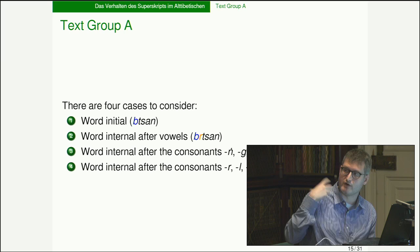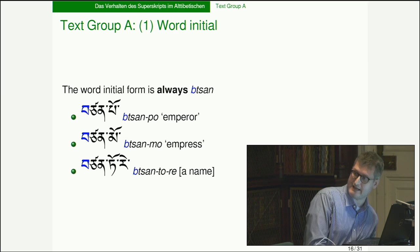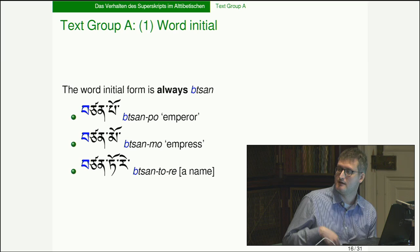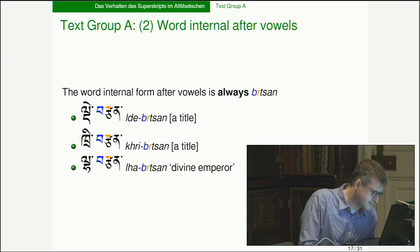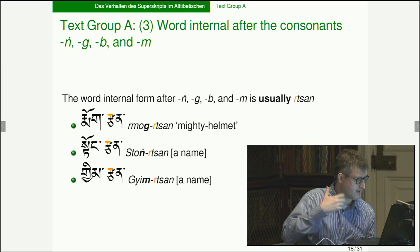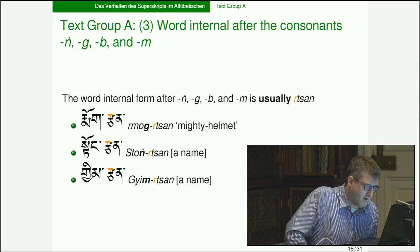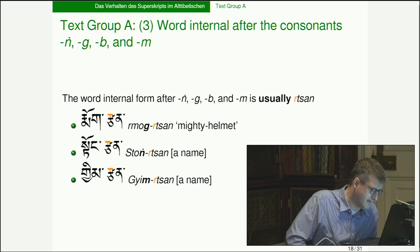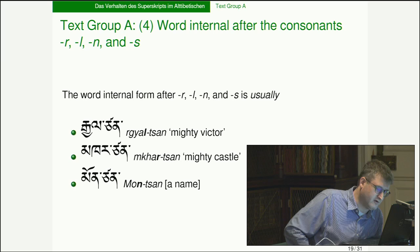Looking at word-initial forms in Group A, you get 'tsenpo,' 'tsenmo,' and 'centore' — the 'b' prescript but not the 'r' superscript, same as Group B. Word-internally you get both the 'b' and the 'r': 'detzen,' 'tritzen,' 'latsen.' For Group A's distinguishing cases, word-internal after ng, g, b, m we usually get 'rtsan': 'mok tsan' (mighty helmet), 'tong tsan' (a name), 'gim tsan' (a name).